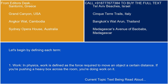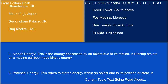Let's begin by defining each term. 1. Work. In physics, work is defined as the force required to move an object a certain distance. If you're pushing a heavy box across the room, you're doing work on it. 2. Kinetic energy. This is the energy possessed by an object due to its motion. A running athlete or a moving car both have kinetic energy.